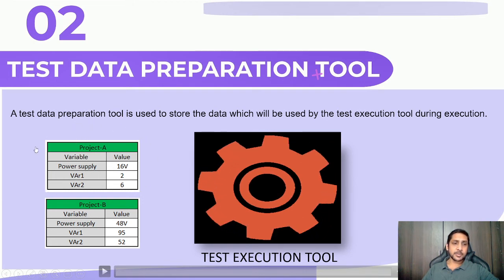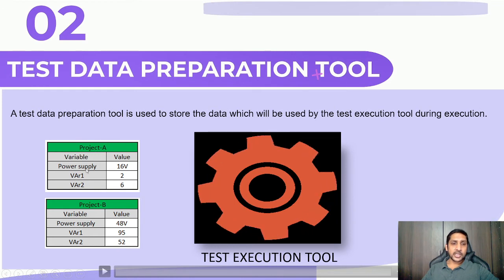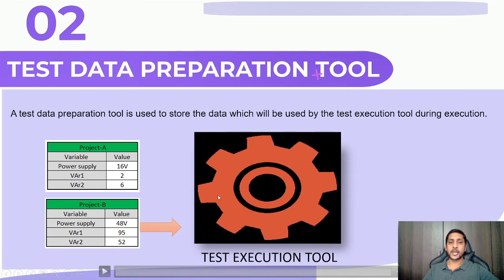For example, suppose this is a test preparation tool where data is available — for instance, power supply 16 voltage, and variables variable one and variable two with values like two and six. These values are then fed to the test cases during execution, so the tool gets data from here and executes based on that. If you are working on project A, that data is fed to the tool; for project B, different data is fed. This is how the test data preparation tool works.